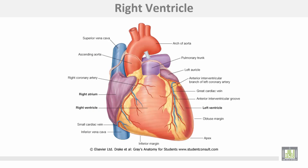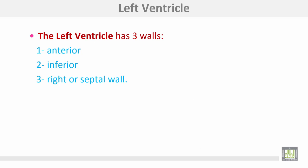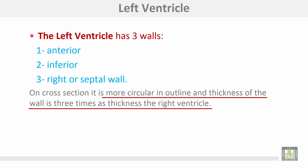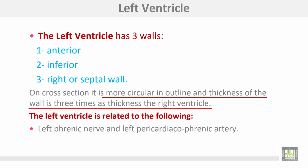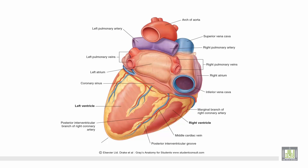The right ventricle forms the main part of the sternocostal surface of the heart. The left ventricle also has three walls: anterior, inferior, and the right or septal wall. On cross-section, the left ventricle is more circular in outline, and the thickness of its wall is three times the thickness of the right ventricle. The left ventricle is related to the left phrenic nerve and the left pericardiacophrenic artery, and it forms most of the diaphragmatic surface of the heart.